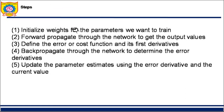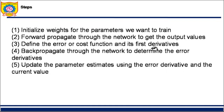Step one: initialize weights for the parameters we want to train. As I said, weights are going to be random — initialize all those arcs with certain weights. Step two: forward propagate through the network to get the output values. We forward propagate and arrive at the final output. Step three: find the error function, also called the cost function. We need to find the derivatives of this. Why derivatives? Because our aim is to minimize this error function, and to minimize it we require derivatives.